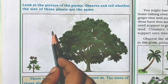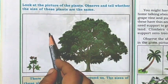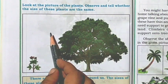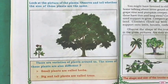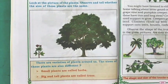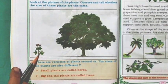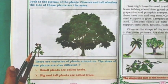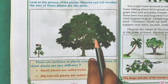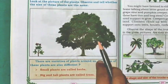Observe and tell whether the size of these plants are the same. No. There are varieties of plants around us. The sizes of these plants are also different. Small plants are called herbs. Big and tall plants are called trees.